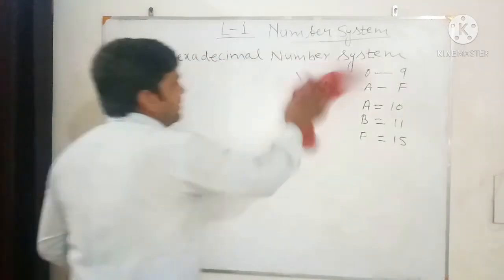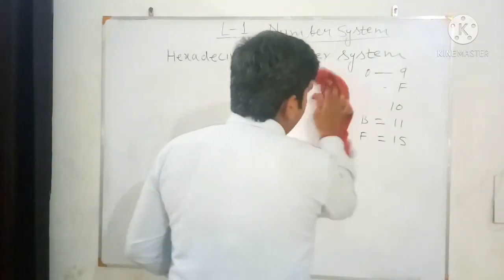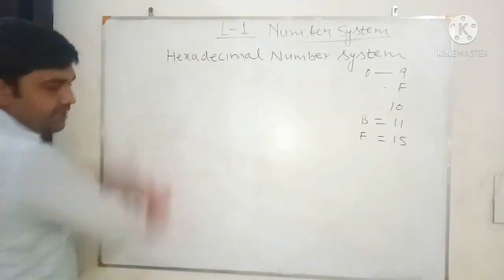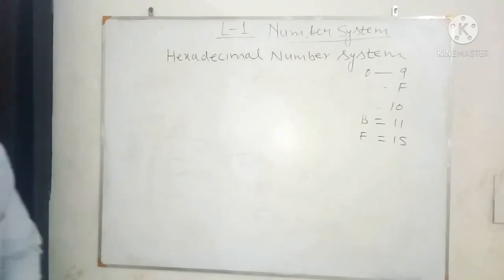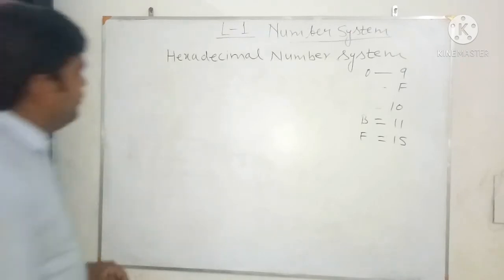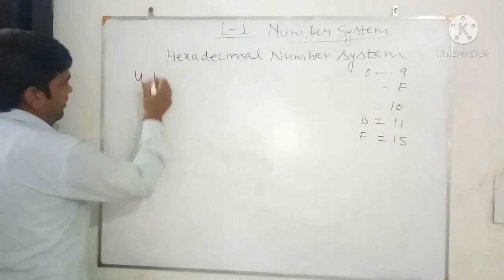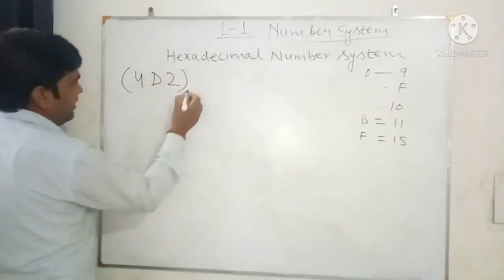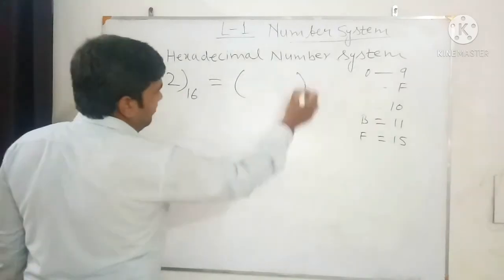Now we do the reverse operation and convert hexadecimal into the decimal number system. We take the hexadecimal number 4D2 and convert it into its decimal equivalent.